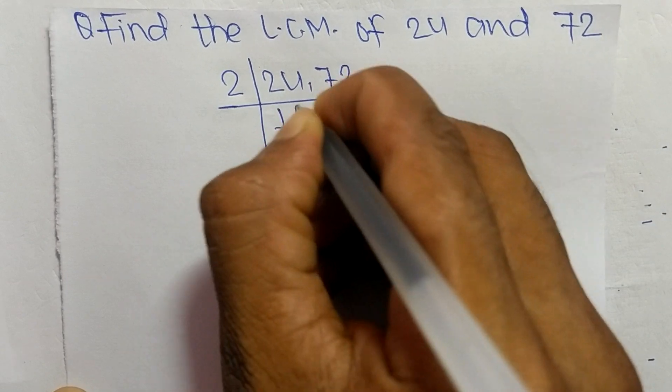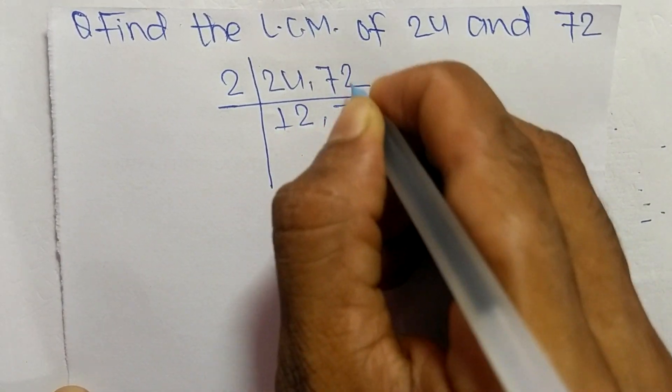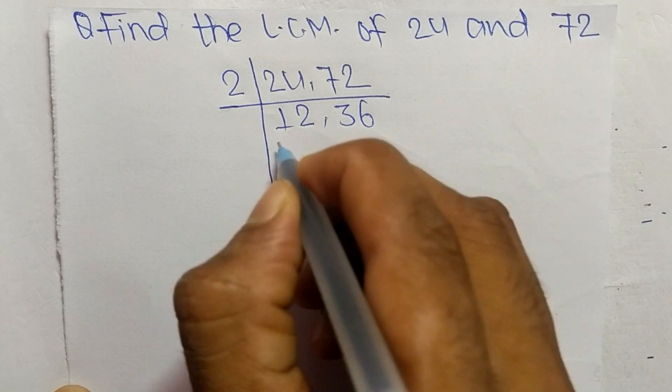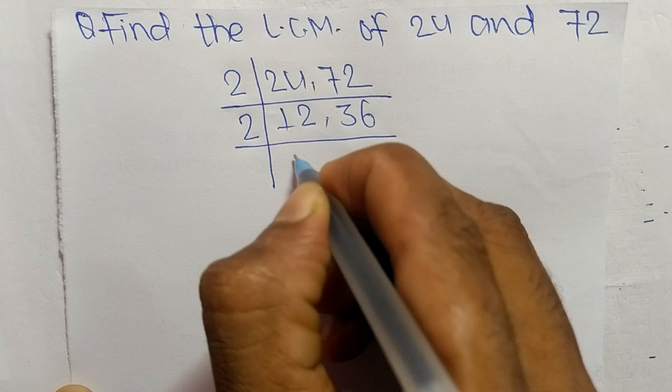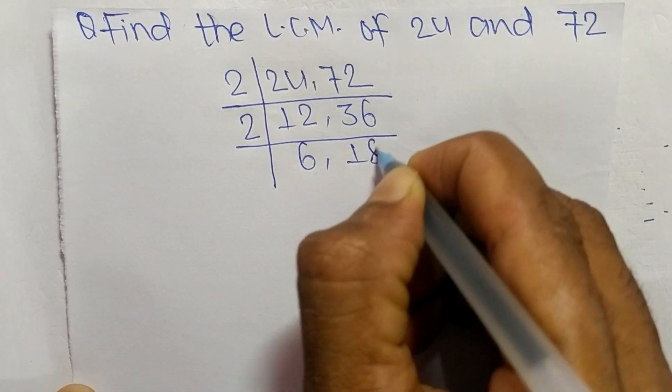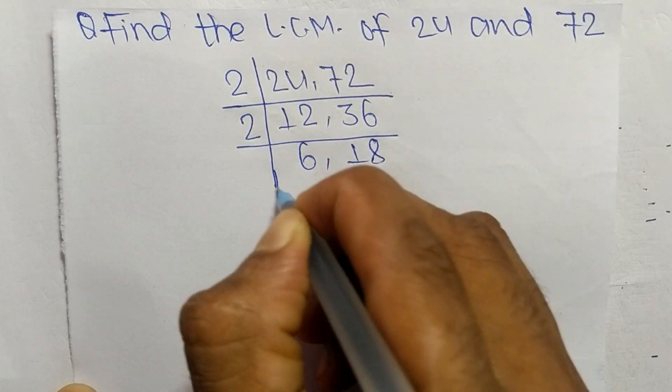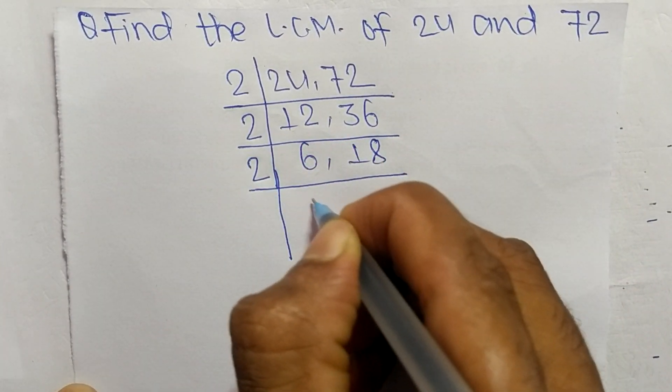2 times 12 means 24 and 2 times 36 means 72. Like as it is again divisible by 2. So 2 times 6 means 12, 2 times 18 means 36.